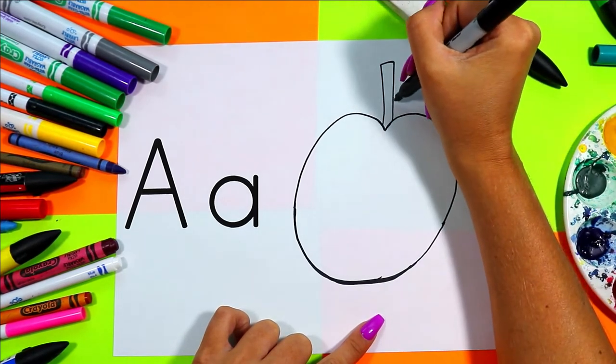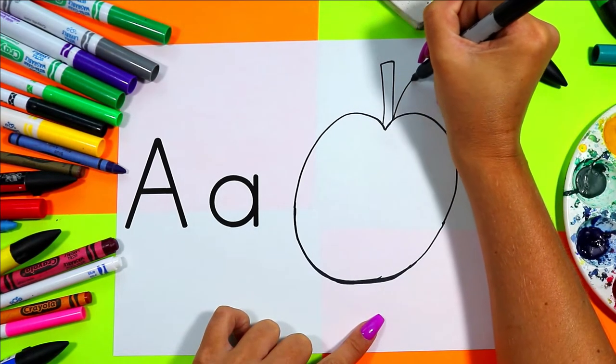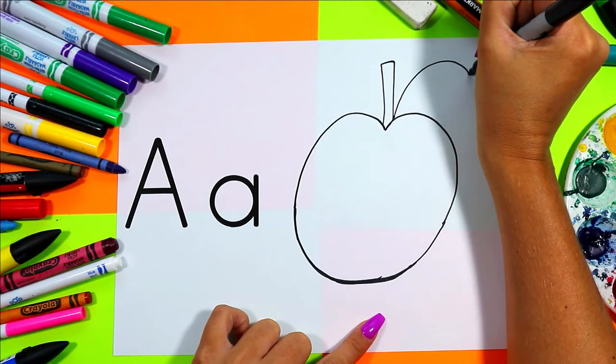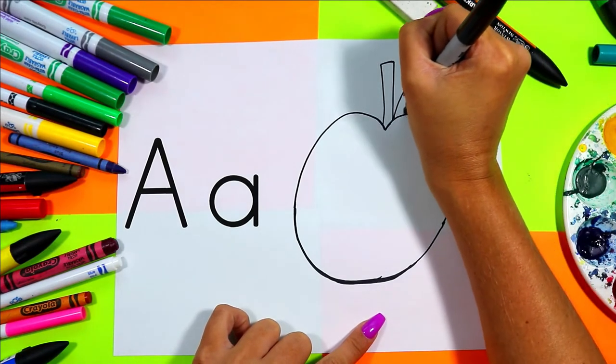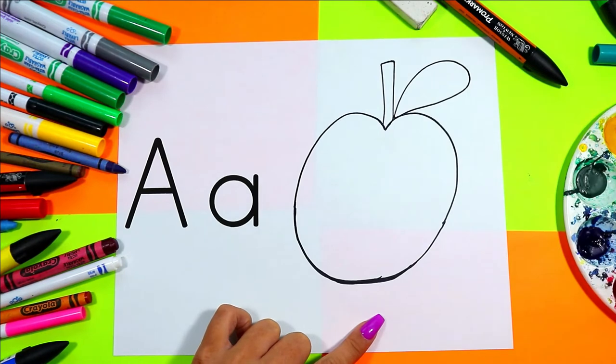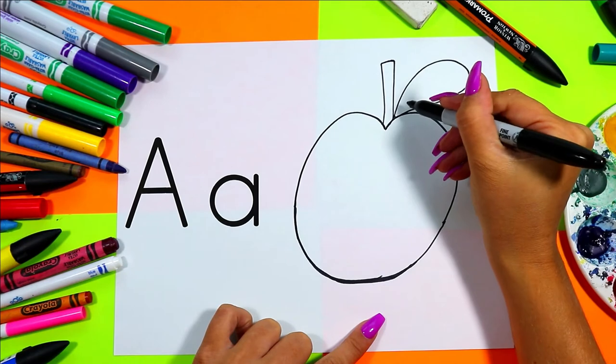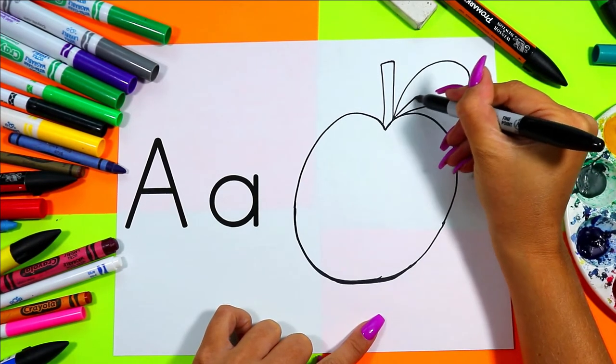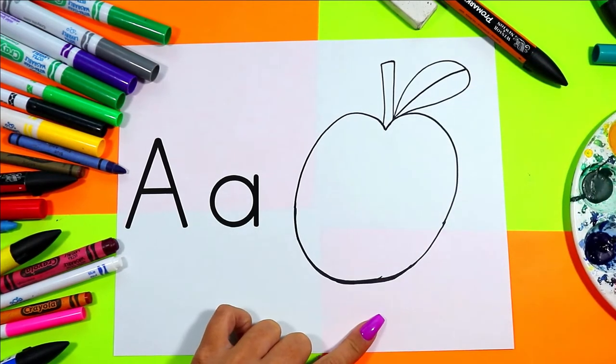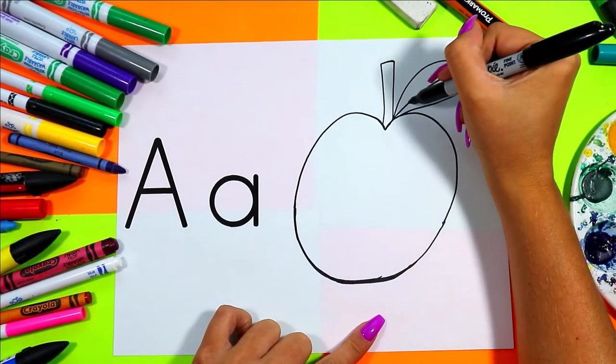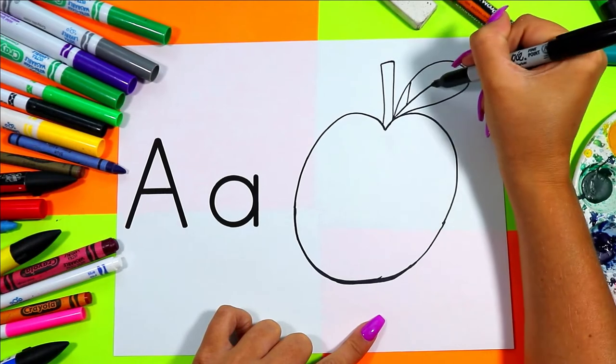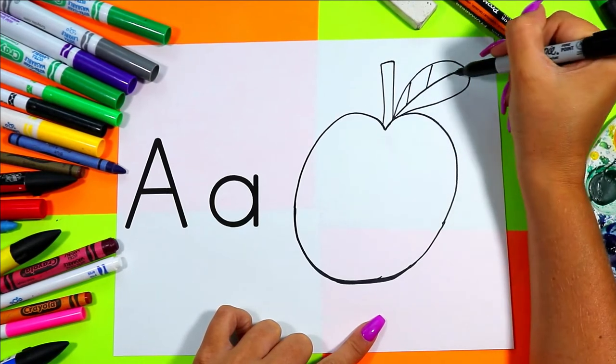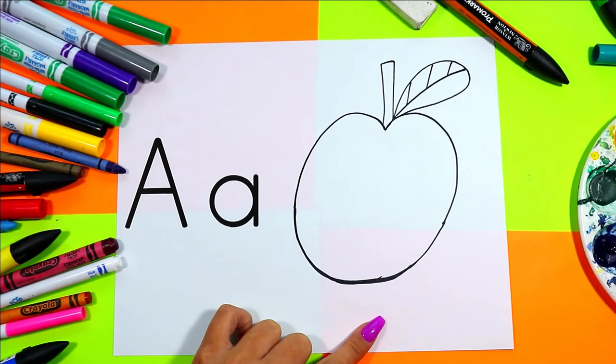Next we're going to draw a beautiful apple leaf with a nice line that comes out, around, and in. And of course leaves have beautiful texture, so we're going to draw one line across the leaf and one, two, three diagonal lines on one side of our apple's leaf.